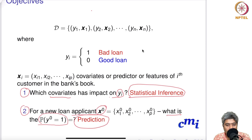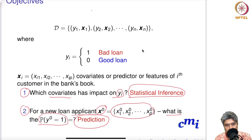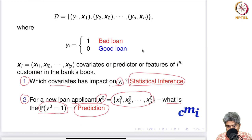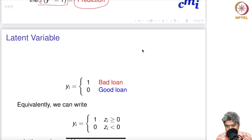You want to predict the probability that a new customer will turn out to be a bad customer based on the features provided — the financial status, the last few years of tax return statements, the education level, and so on. Based on all of that, you want to predict whether the customer will default or not. This belongs to the prediction problem.